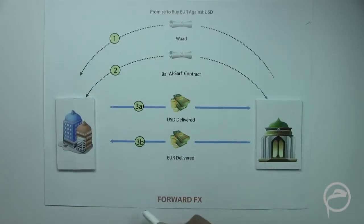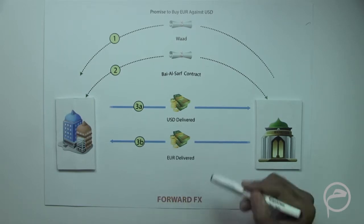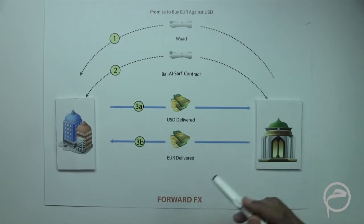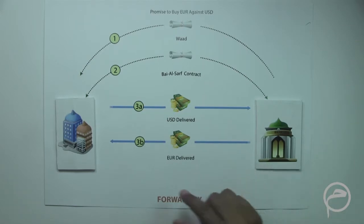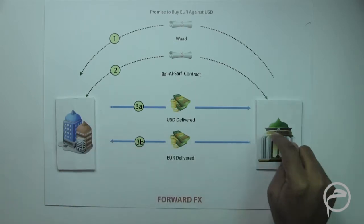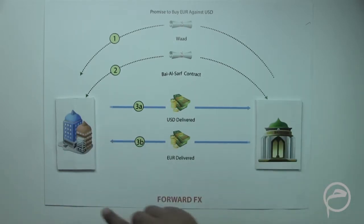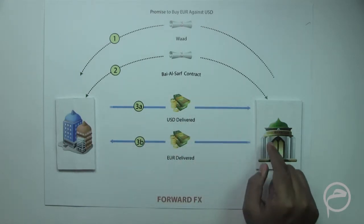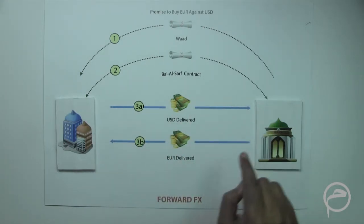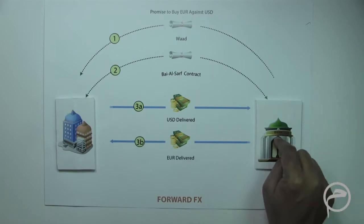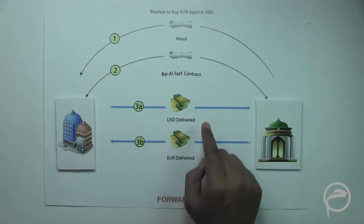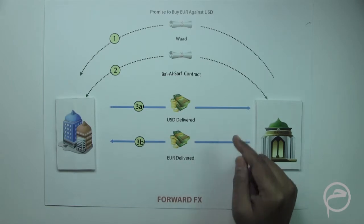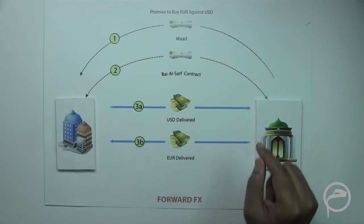Bismillah ar-Rahman ar-Rahim. Let us discuss how to structure an Islamic forward FX. Basically, a forward FX involves exchange of currencies between two parties — a corporate and a bank. A forward FX involves the promise or undertaking by one party to buy the required currency against the base currency on a specified future date at a promised exchange rate.